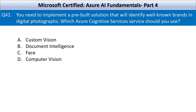Question number 41: you need to implement a pre-built solution that will identify well-known brands in digital photographs. Which Azure Cognitive Services service should you use? Your options are Custom Vision, Document Intelligence, Face, and Computer Vision.